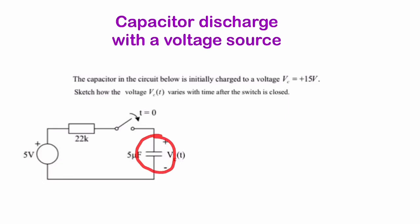Here we have a capacitor that's charged to 15 volts initially, and then this switch is closed and the capacitor discharges.